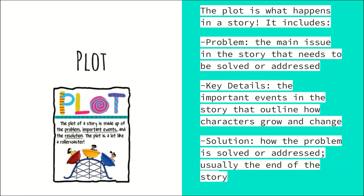The plot is perhaps one of the most important elements for reading comprehension because it's what's going on in the story — what happens. The plot is a lot like a roller coaster. It includes the problem, which is the main issue that needs to be solved or addressed; key details, which are important events that outline how characters grow and change; and the solution, which is how the problem is solved — usually found towards the end of the story. Going up the roller coaster represents the key details leading to the climax, and going down represents the solution. Plot is basically what the story is all about.